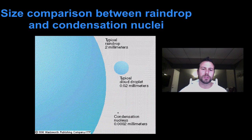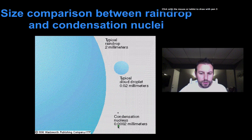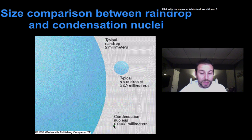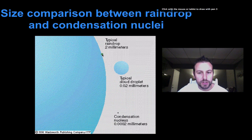Here's a comparison between raindrops and condensation nuclei. The condensation nucleus is 0.0002 millimeters — two ten-thousandths of a millimeter, extremely small. A cloud droplet is 0.02 millimeters, and then a raindrop is two millimeters. So you can see how they get bigger as you go up, and how they compare to each other.